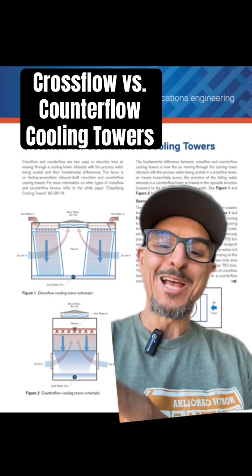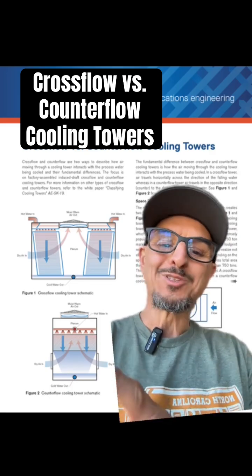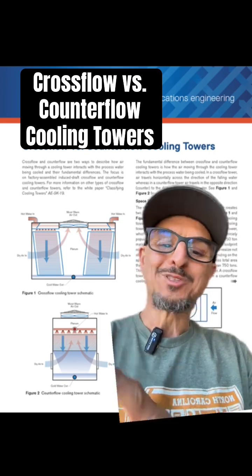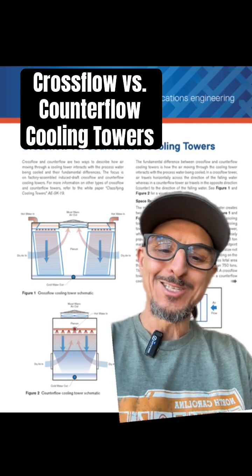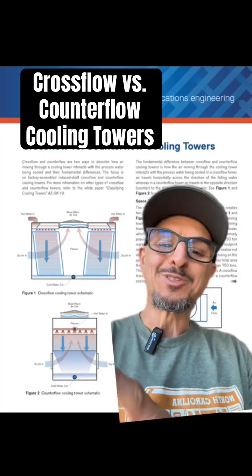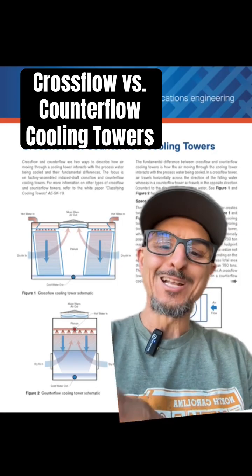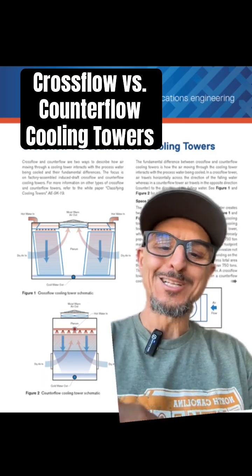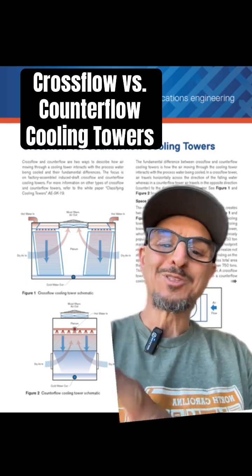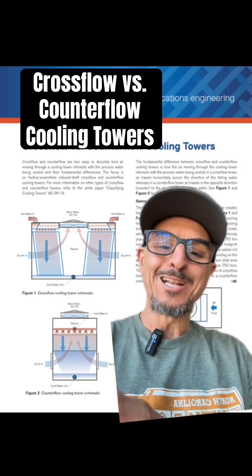Another difference is the way the water is fed and flows through the fill. In a cross flow application, the water is fed to a basin and the nozzles gravity feed the water through the fill. In the counter flow, the condenser water is fed through a piping distribution and the pressurized water is pushed through the nozzles and sprayed over the fill, so you have a little more pump work on the counter flow. To summarize, if you've got a tower under 750 tons and real estate is a premium, start looking at the counter flow tower.